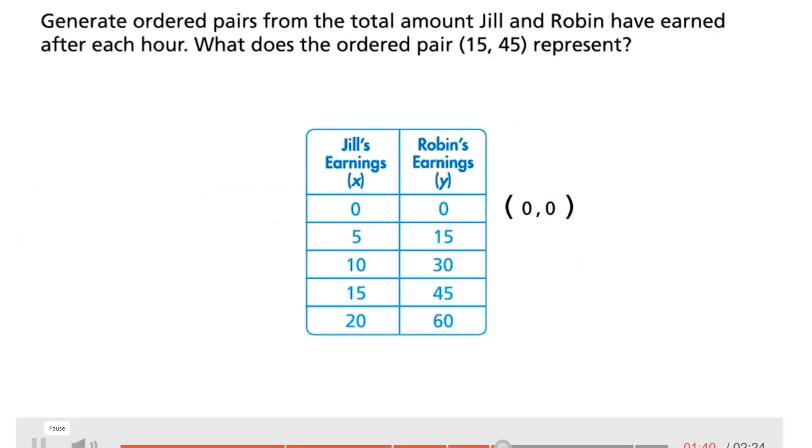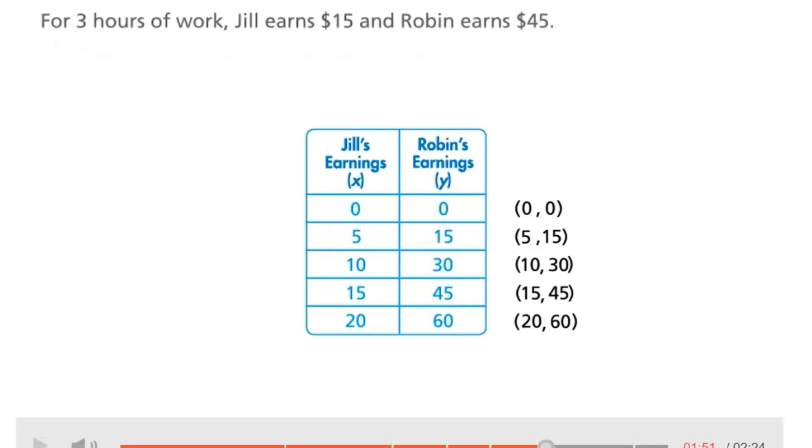Each term in Robin's pattern is three times as great as the corresponding term in Jill's pattern. You can look for a relationship between the numbers. Generate ordered pairs from the total amount Jill and Robin have earned after each hour. What does the ordered pair fifteen, forty-five represent? For three hours of work, Jill earns fifteen dollars and Robin earns forty-five dollars.